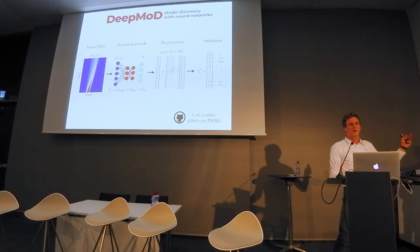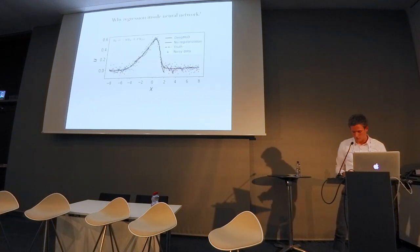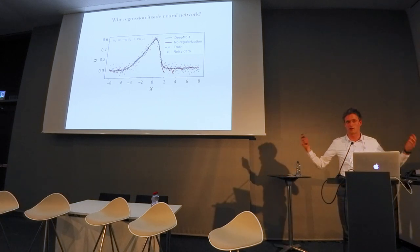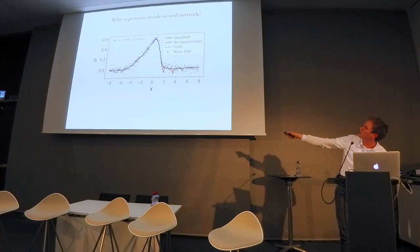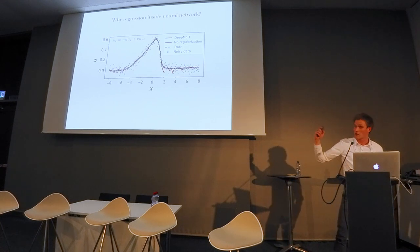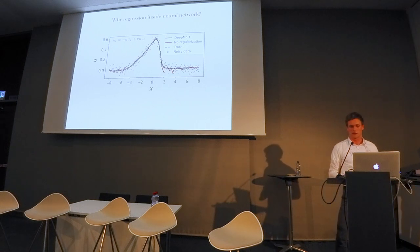Doing this regression within the neural network actually helps you to prevent overfitting. If you would only train your neural network on mean square error and afterward do the regression, you can see that this red solution without the regression starts to overfit, so you start to learn the noise. If you add this regression term within the neural network, you prevent this overfitting to large extents.